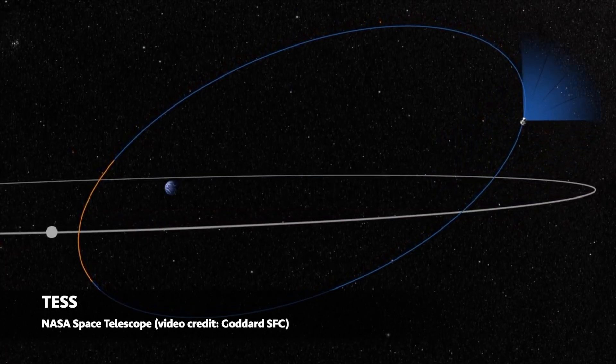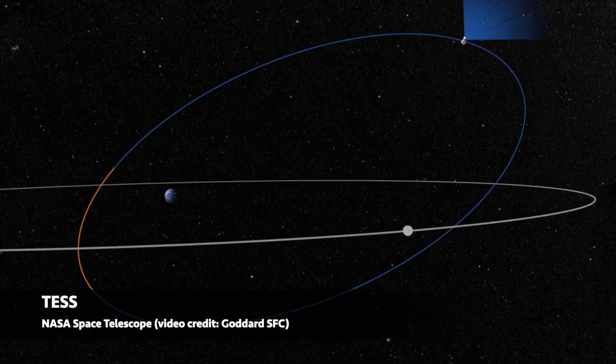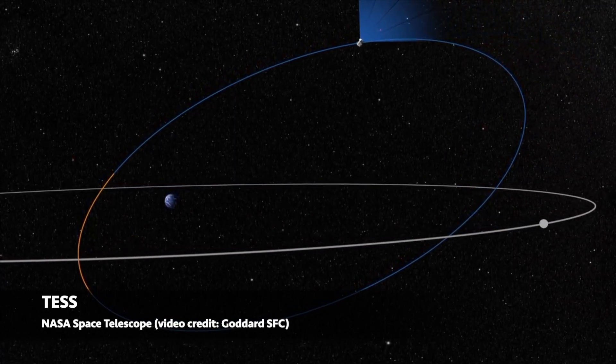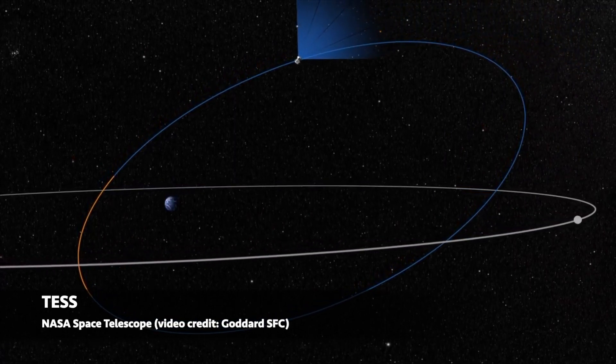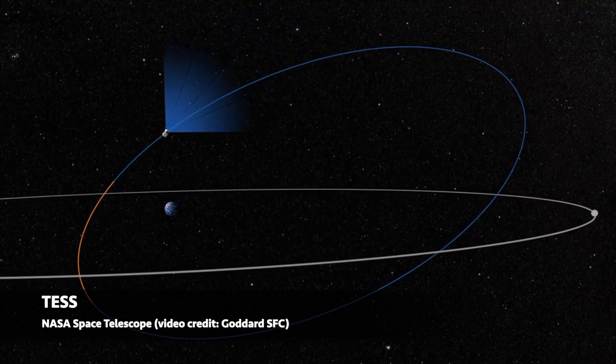TESS is a space telescope that orbits the Earth, allowing us to stare at the stars for months uninterrupted by the day-night cycle, the atmosphere, or clouds.